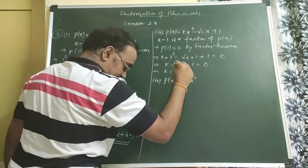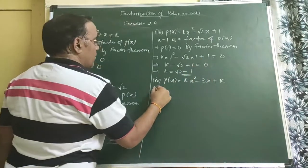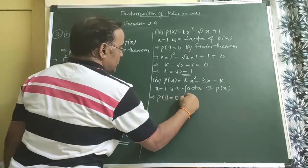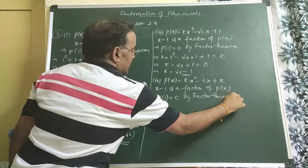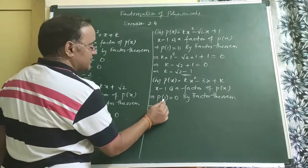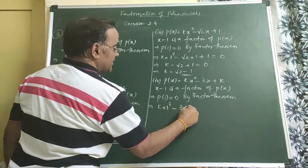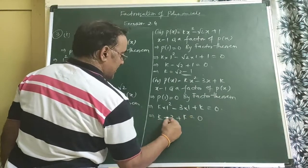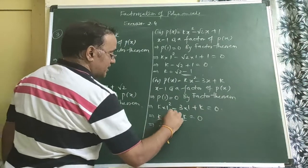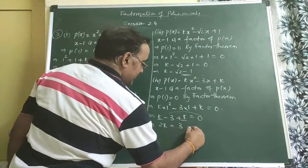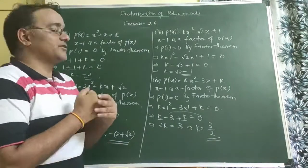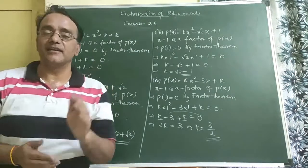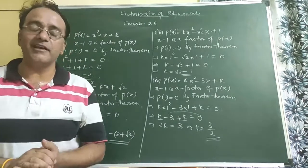Fourth bit: P(x) = kx² − 3x + k. Since (x − 1) is a factor, P(1) = 0. Substituting x = 1: k(1)² − 3(1) + k = 0, giving k − 3 + k = 0, so 2k = 3, therefore k = 3/2. This completes the three questions of Exercise 2.4. The fourth and fifth questions on factorization of quadratic and cubic polynomials will be taken up in the next session.